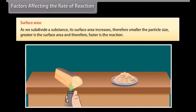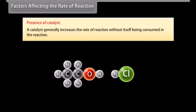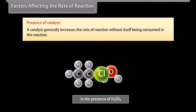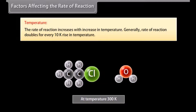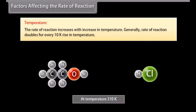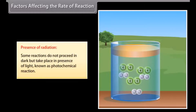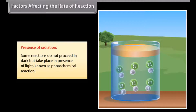Surface area: as we subdivide a substance, its surface area increases. Therefore, smaller the particle size, greater the surface area and faster the reaction. Presence of a catalyst: a catalyst generally increases the rate of a reaction without itself being consumed. Temperature: the rate of a reaction increases with an increase in temperature; generally, the rate doubles for every 10 Kelvin rise in temperature. Presence of radiation: some reactions do not proceed in dark but take place in the presence of light, known as photochemical reactions.